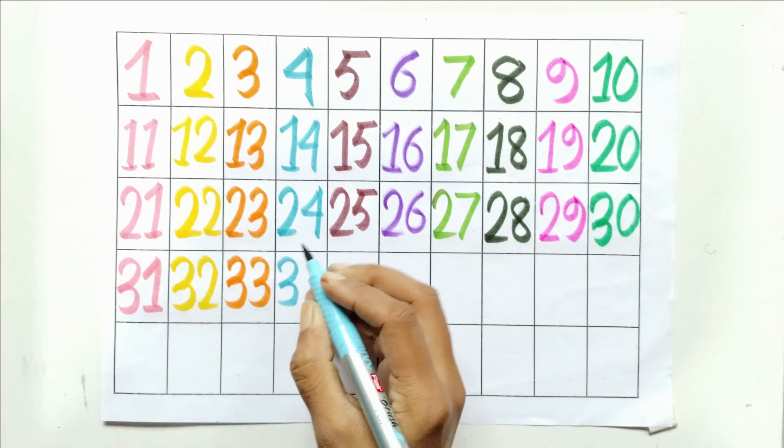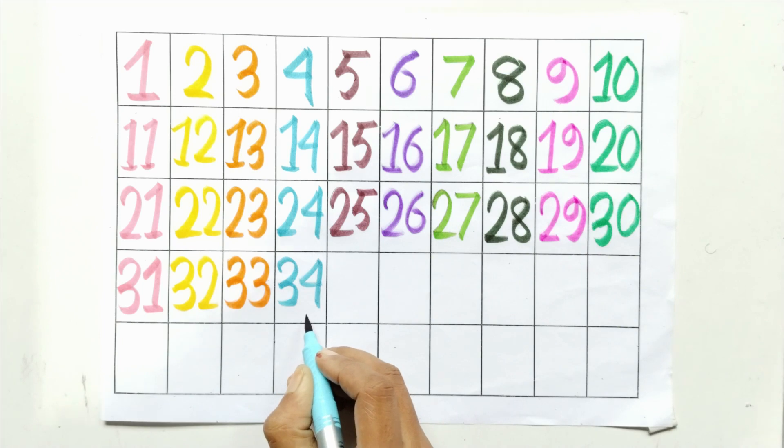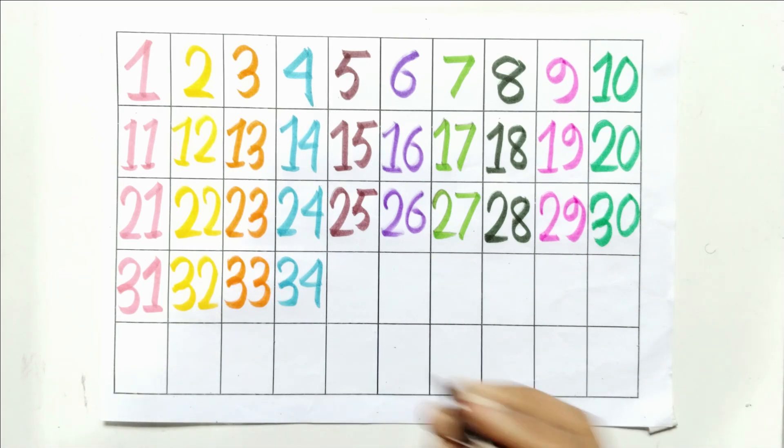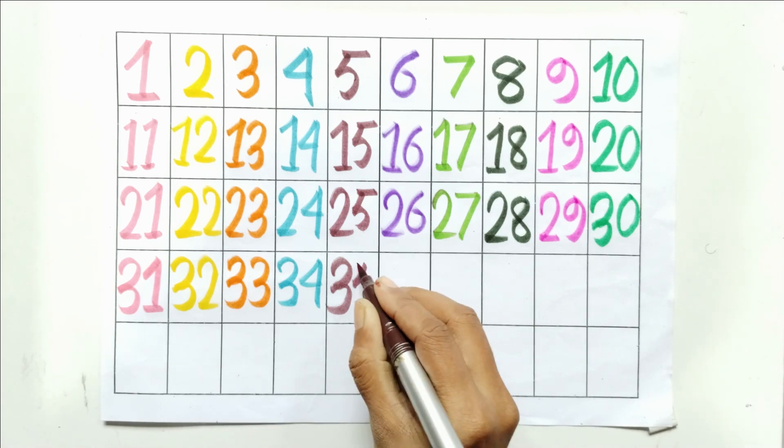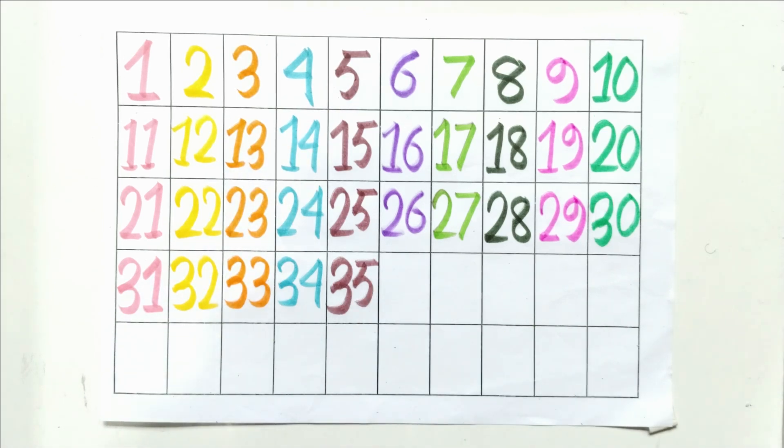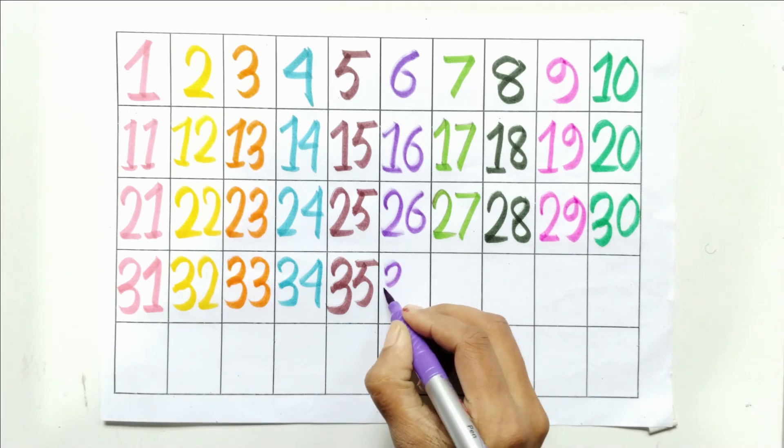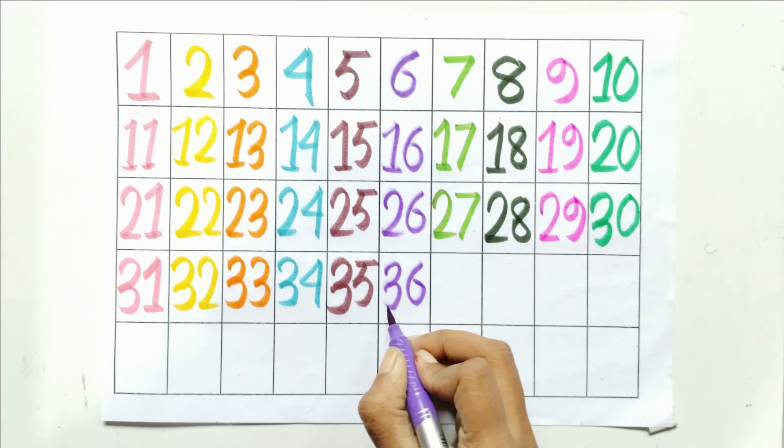Three and four, thirty-four. Three and five, thirty-five. Three and six, thirty-six.